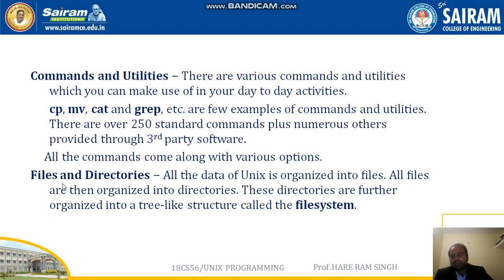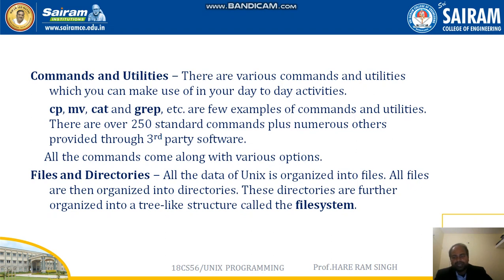The fourth main part of Unix operating systems is files and directories. All the data of Unix is organized into files, and all files are organized into directories. These directories are further organized into a tree-like structure called the file system. Files and directories are organized in a hierarchical way. Files are arranged very properly in a tree-like structure using a parent-child system in Unix operating system.